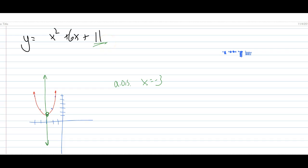This 11 that we have at the end is going to always be our y-intercept. 0 comma 11 is where this graph would eventually cross the y-axis.